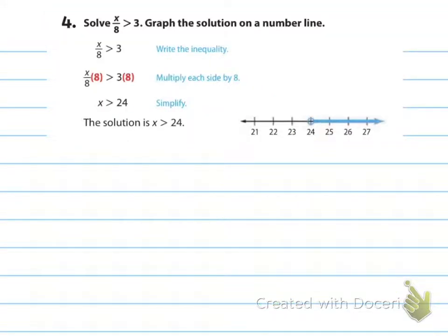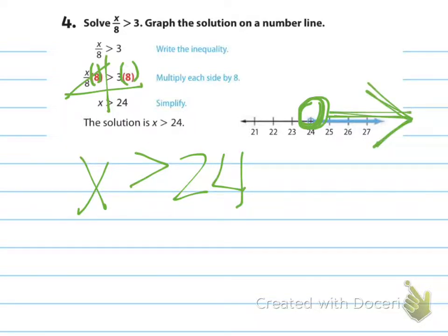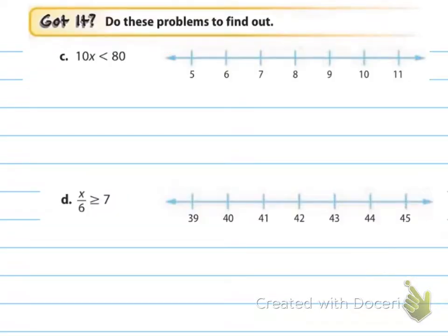Example four: x divided by 8 is greater than 3. Multiply both sides by 8 — the 8s cancel on the left, and 3 times 8 is 24 — so x is greater than 24. Since it's greater than and not equal to, it's an open circle, with the arrow going to the right. Check with 32: 32 divided by 8 is 4, which is greater than 3.